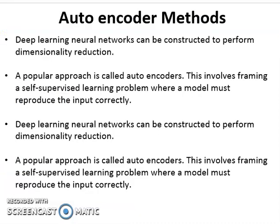The next technique is the autoencoder. Deep learning neural networks can be constructed based on deep learning technologies to perform dimensionality reduction. This popular approach is known as the autoencoder, which involves self-supervised learning where a model must reproduce the input correctly. The autoencoder automatically encodes the input data.